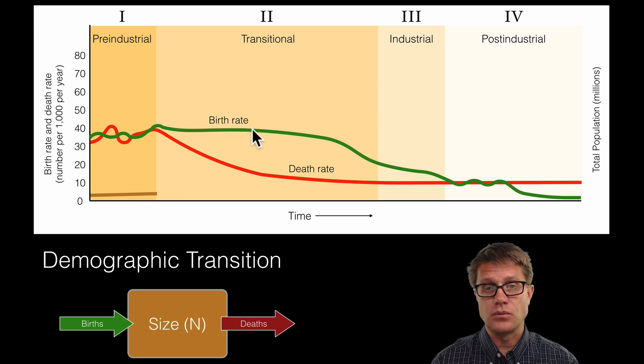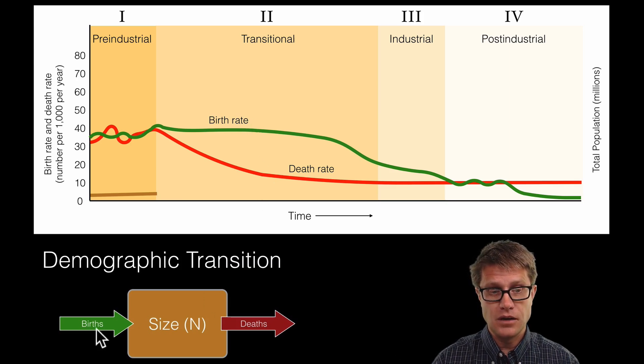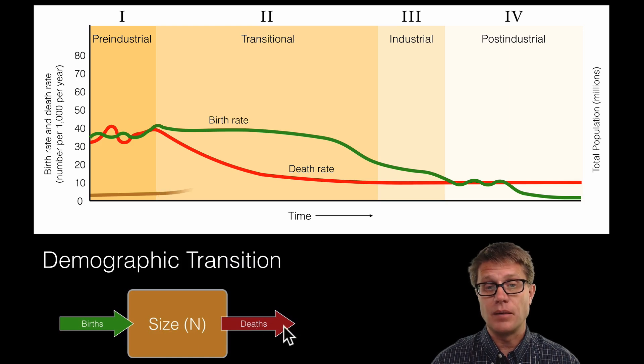And so if we have a population where the birth rate is higher than the death rate, think about this down here, if more births are coming in than deaths are leaving, we are going to see a massive exponential increase in the population.